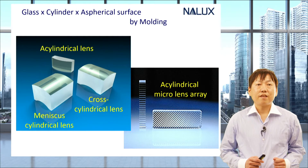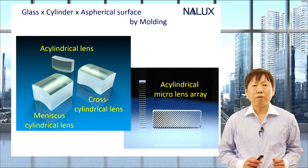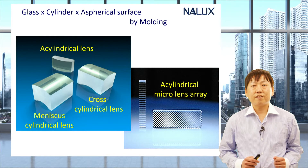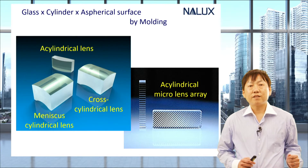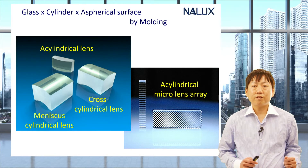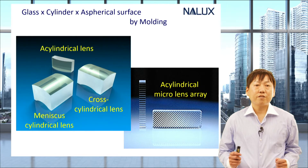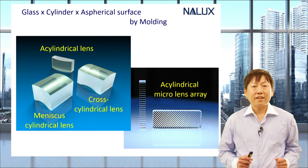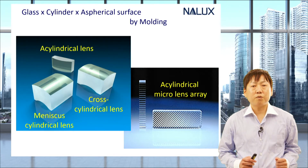For instance, the shapes of acylindrical lenses — meniscus lenses, double-sided cylindrical lenses, double-sided cross cylindrical lenses, acylindrical micro-lens arrays, and more — have all been made possible by molding.